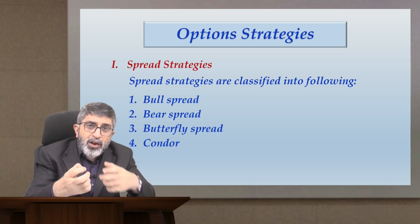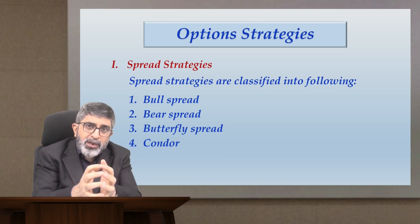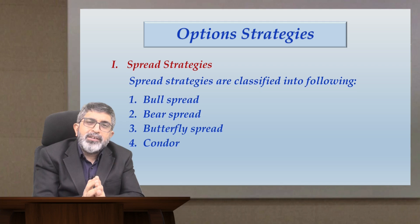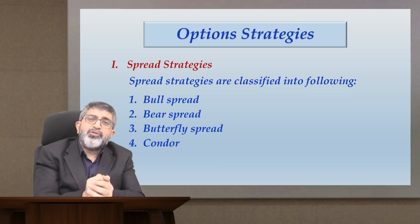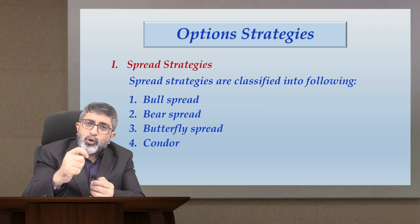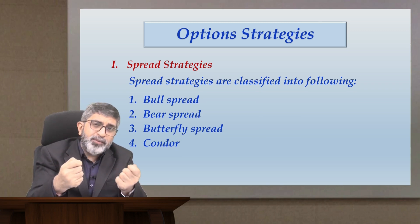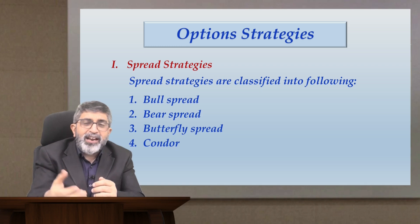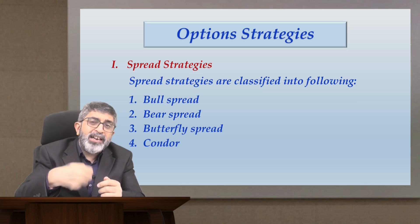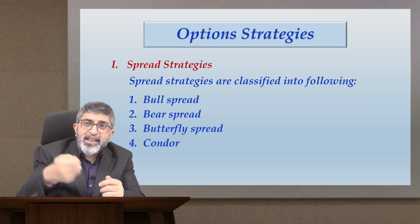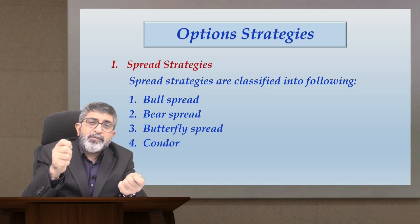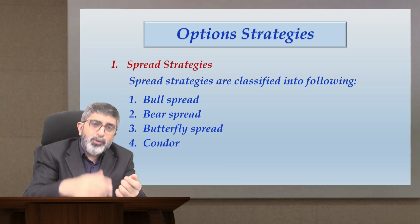A call holding and call writing combination, or a put holding and put writing combination, would result in either of the first two strategies — either a bull spread or a bear spread. A bull spread, as the name says, is created when you have a sentiment that stock prices would go up. A bear spread is generally created when you have a sentiment that the stock price would fall.